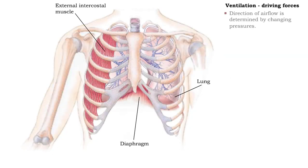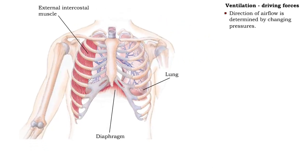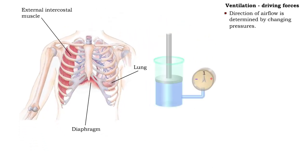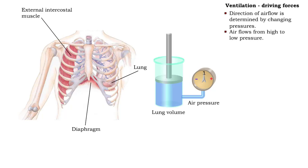The movement of air is driven by pressure. A gas cylinder with a pressure gauge clearly illustrates the relationship between volume and pressure. Air will naturally flow from regions of high pressure to regions of low pressure. Pressure can be altered by changing the volume of the compartment.